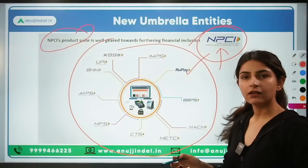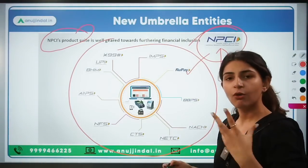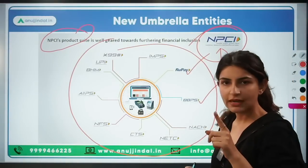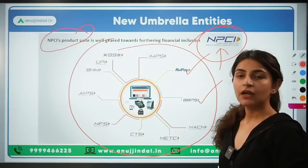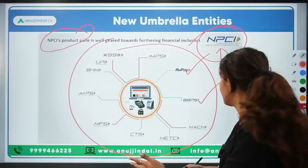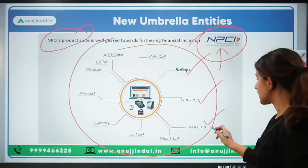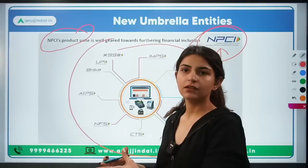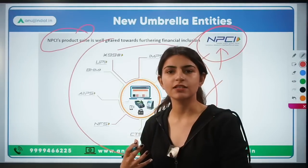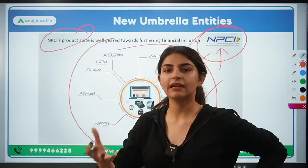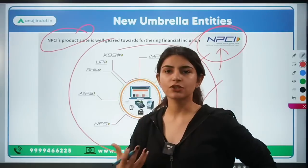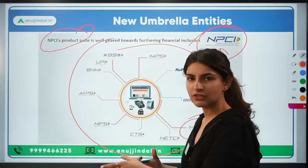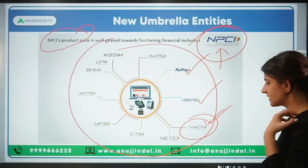For example, RuPay card is for very low-value transactions, both online and offline. Bharat Bill Payment System is for making bill payments. NACH — National Automated Clearinghouse — is for bulk payments. For example, when a company wants to pay dividend or interest to a large number of bank accounts or beneficiaries, that is NACH.